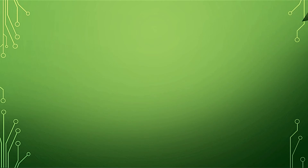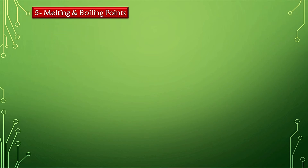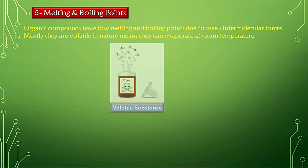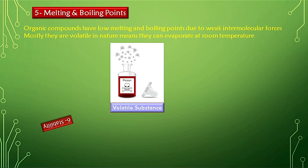The next property is melting and boiling points. Organic compounds have low melting and boiling points due to weak intermolecular forces. Because molecules are not strongly attached to each other, the intermolecular forces are easily broken by providing a low amount of heat. Therefore, most organic compounds are volatile in nature. Volatile substances are those which can evaporate at room temperature — for example, perfumes, petrols, and thinners.